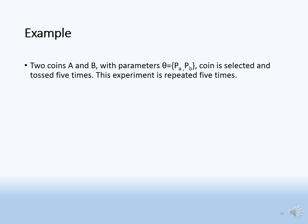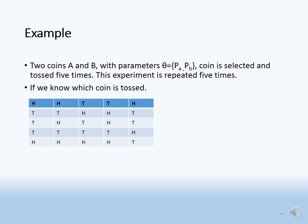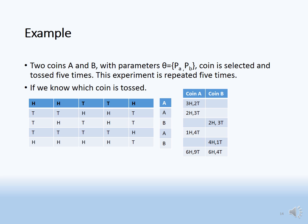Example: two coins A and B with model parameter theta = {p_A, p_B}. A coin is selected and tossed five times, and this experiment is repeated five times. We need to find the model parameters p_A and p_B. If we know which coin was tossed, the calculation is straightforward.